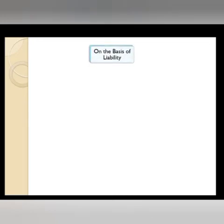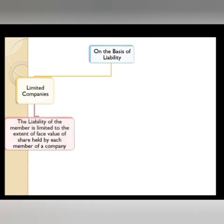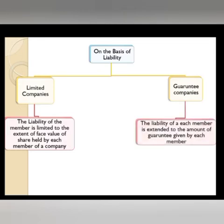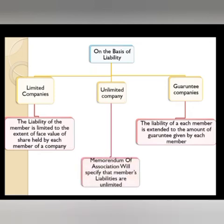On the basis of liability: 1. Limited Companies: The liability of the member is limited to the extent of the face value of shares held by each member of a company. It is called a Limited Company. 2. Guarantee Companies: The liability of each member is extended to the amount of guarantee given by each member. 3. Unlimited Company: The memorandum of association will specify that members' liabilities are unlimited.